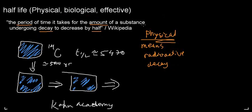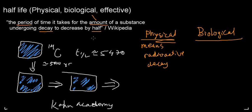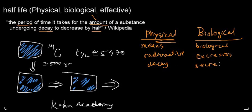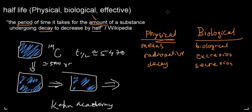So physical half-life is how long it takes my isotope to degrade to half its amount purely through radioactive decay — a physical process. Biological half-life, as the name suggests, involves biological processes. It is the period of time it takes for the amount of a substance to decrease by half by biological means — specifically excretion or secretion from the body.